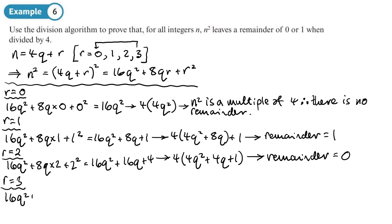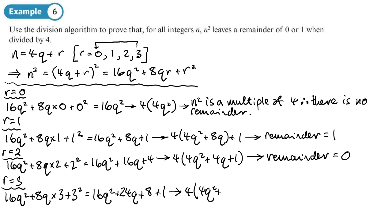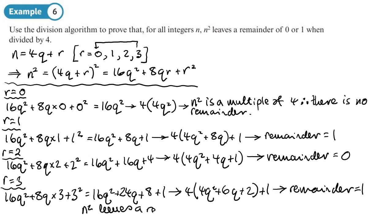When r = 3: n² = 16q² + 24q + 9 = 16q² + 24q + 8 + 1 = 4(4q² + 6q + 2) + 1, so the remainder is 1. In all four cases the remainder is either 0 (when r = 0 or r = 2) or 1 (when r = 1 or r = 3), so n² leaves a remainder of 0 or 1 when divided by 4.